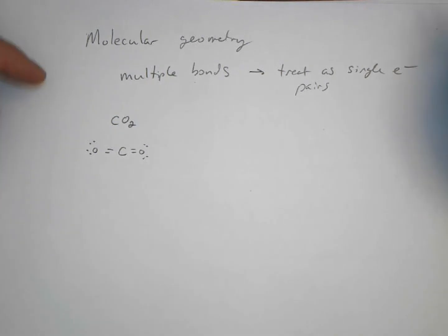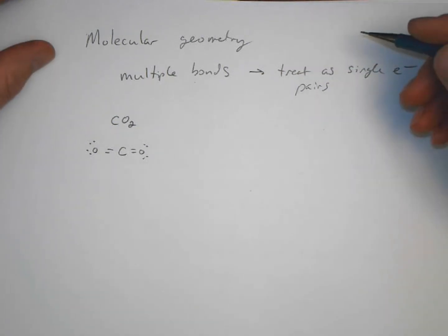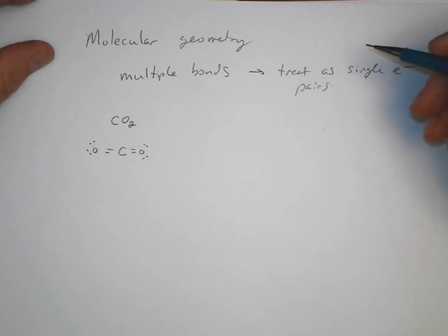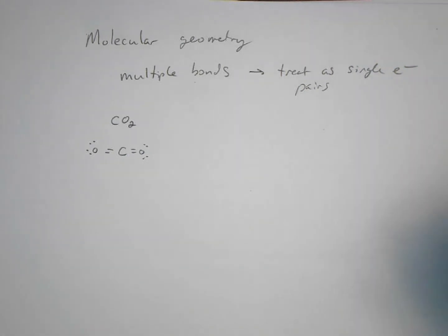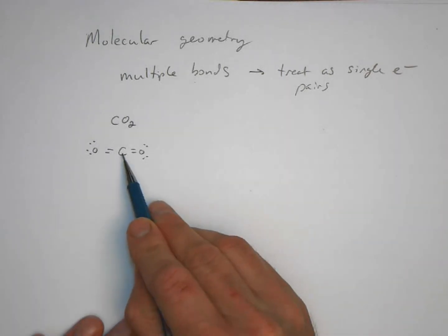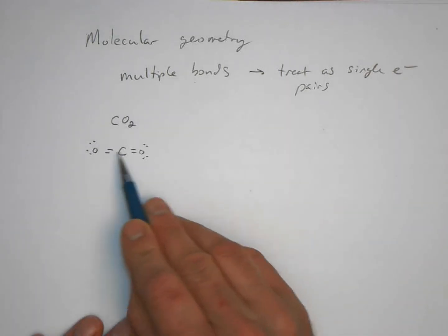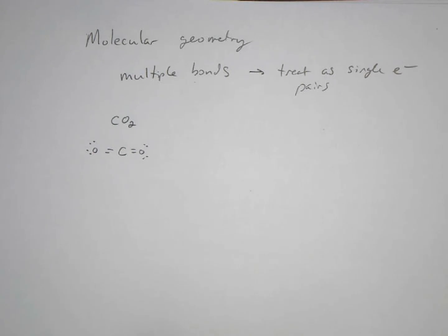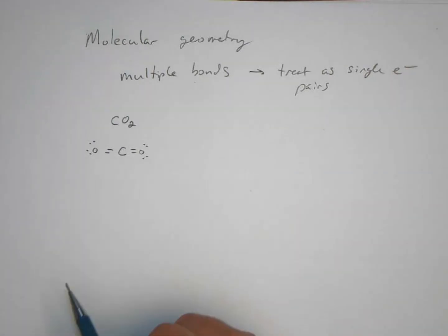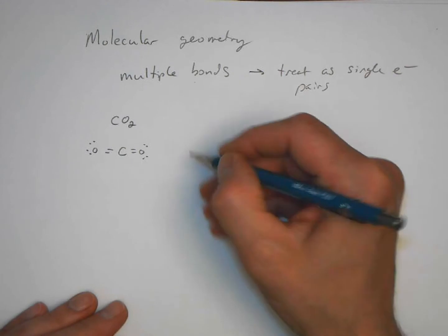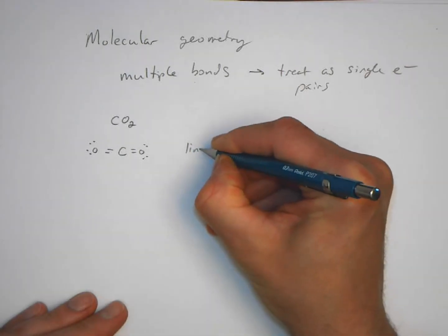The question is, what would we call this molecule from a shape perspective? We can go back to our table. In this case, we have two places we're putting electrons — both of them are bonding pairs of electrons — and so this would simply be a linear molecule.